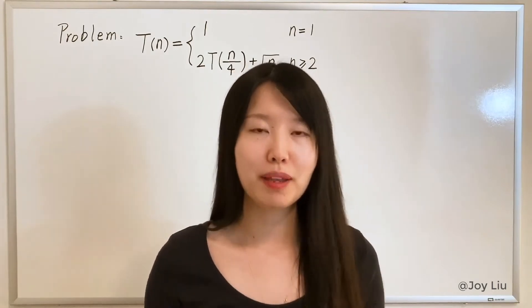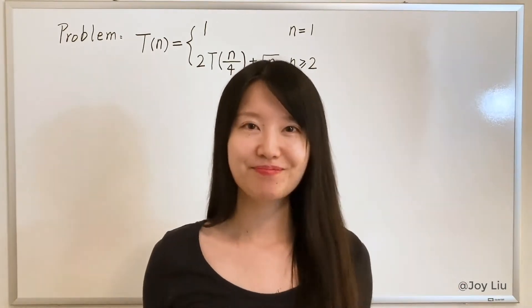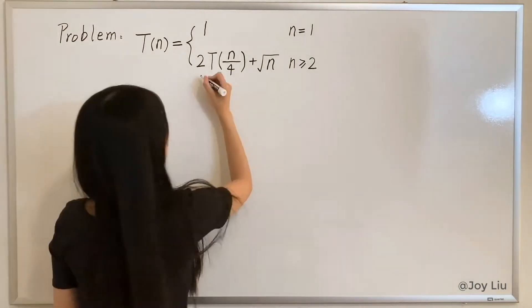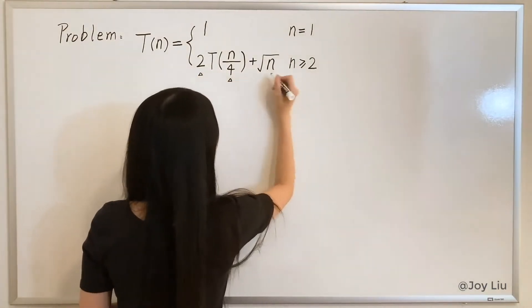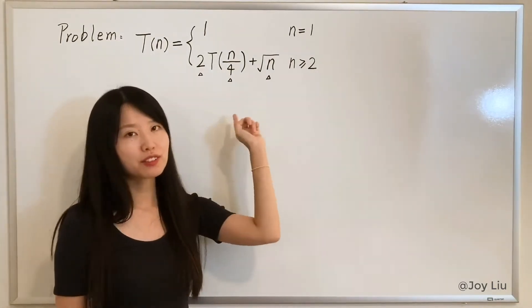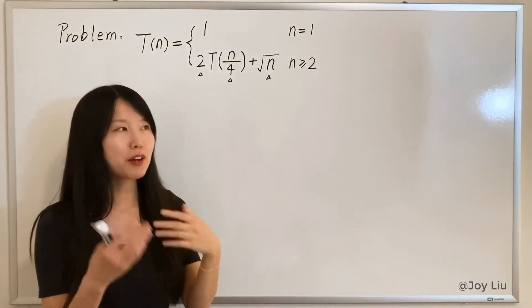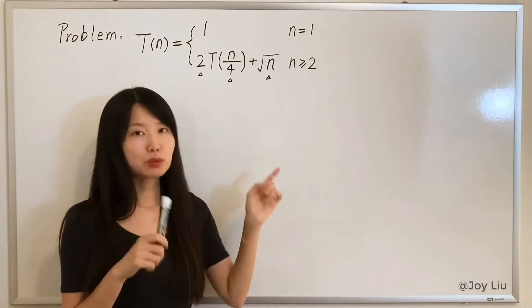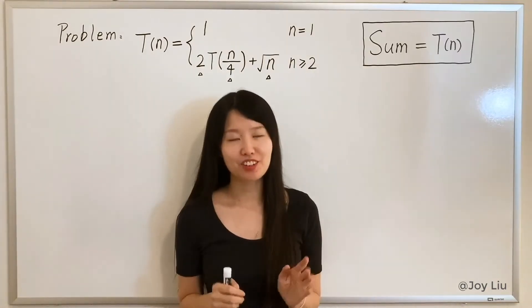After watching this video you will be able to solve this kind of problem and understand how it works. Okay, let's get started. Let's take a look at this problem first. So T(n) equals 1 for n=1, and 2T(n/4) + square root of n for n≥2. They're all different, that's why I chose this question because I don't want you guys to mix them together. You'll be able to see which part is which.